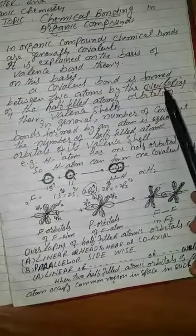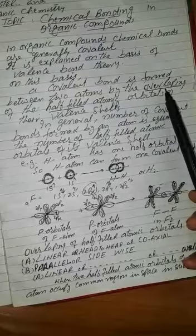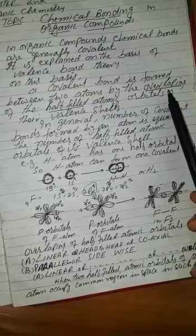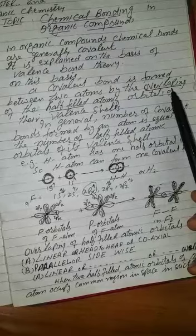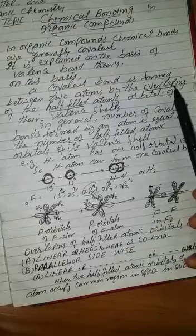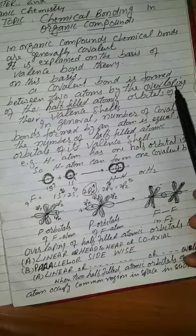What is meant by overlapping? Overlapping means when two half-filled atomic orbitals of two atoms occupy common region in space, it is called overlapping.